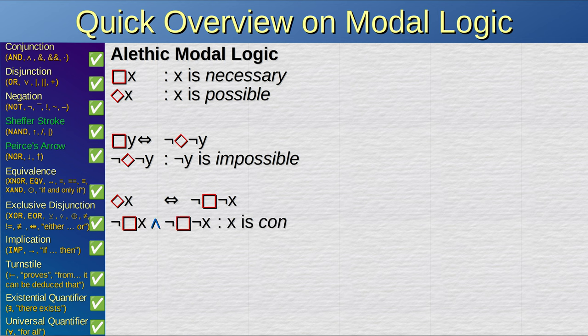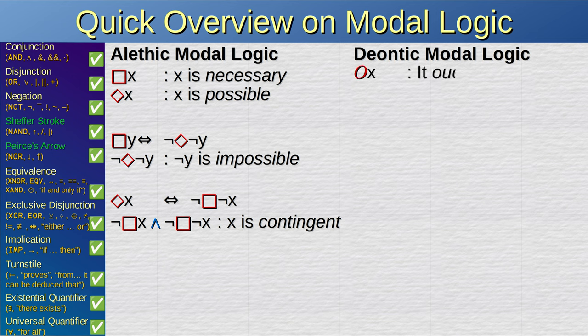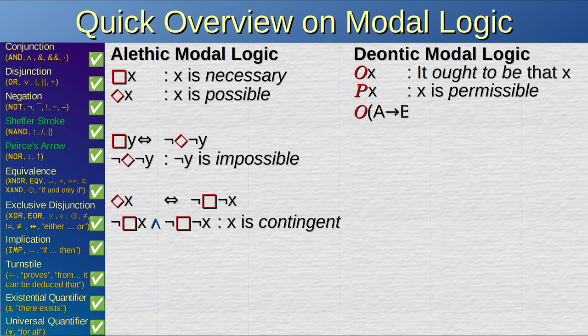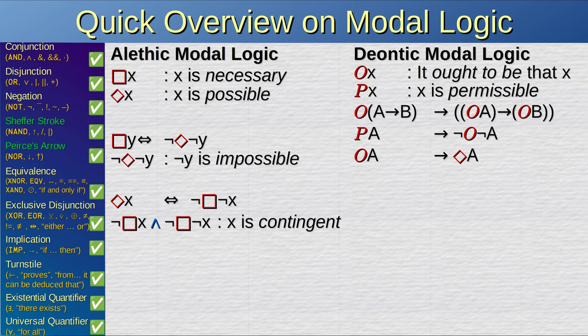Not x is contingent. Deontic modal logic has similar qualifiers. The notation ox means that x ought to be true. The notation px means that it is permissible that x is true. If it ought to be that a implies b, then if a ought to be true, then b ought to be true. If a is permissible, then a ought not be false. If it ought to be that a, then a is possible.